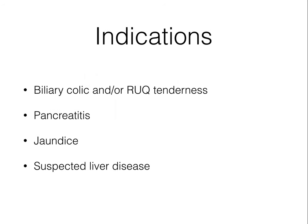So what are the common indications for a right upper quadrant ultrasound? If the patient has biliary colic — pain localized in the right upper quadrant or epigastric area that is worse after eating — or if there is localized tenderness on exam, we'll use ultrasound to look for gallstones as well as gallbladder wall thickening and edema.